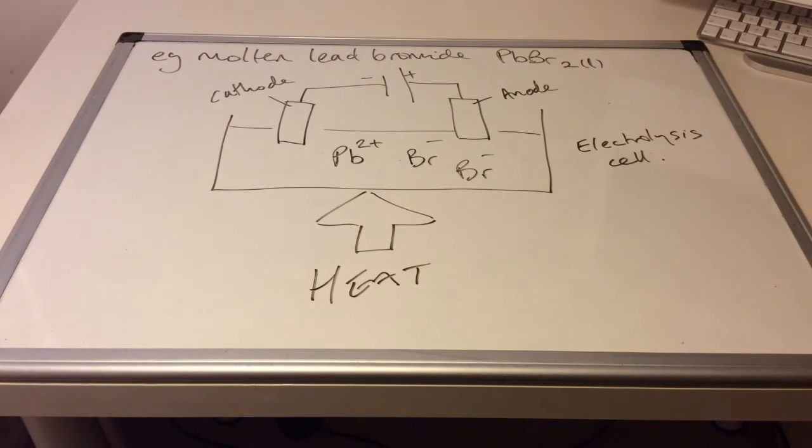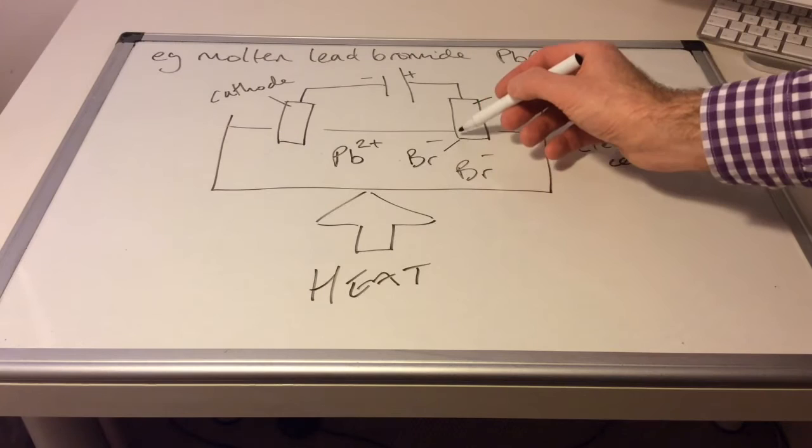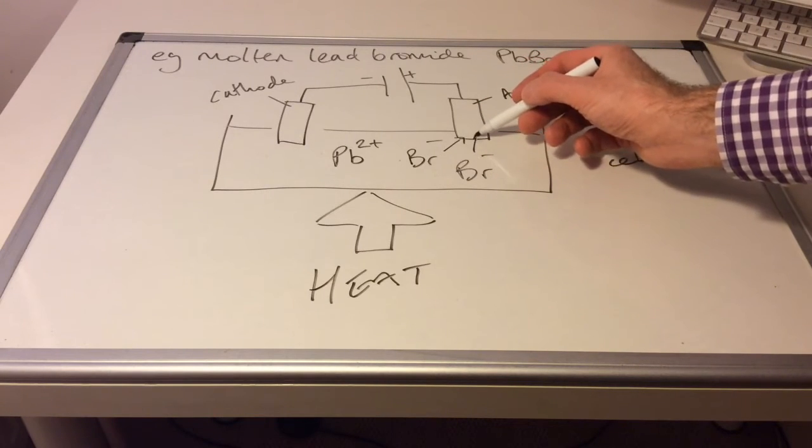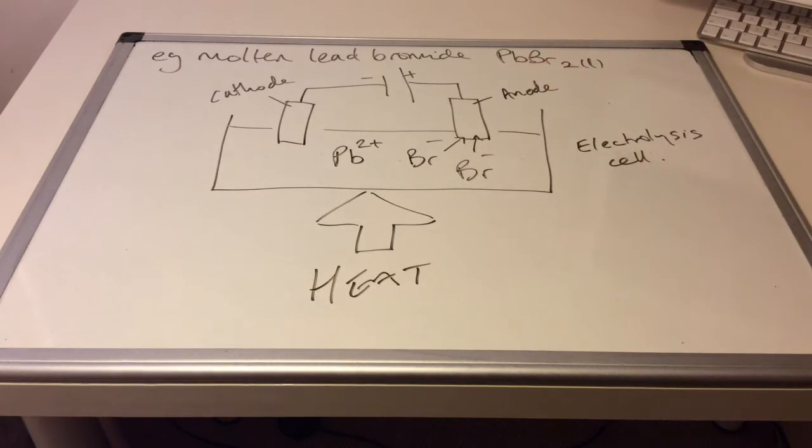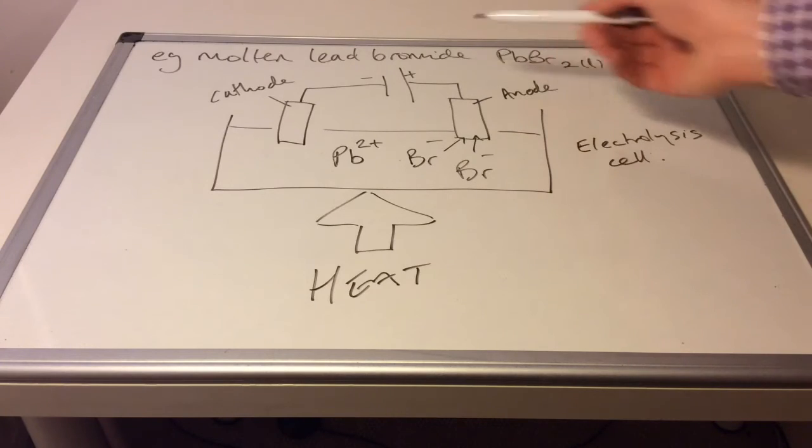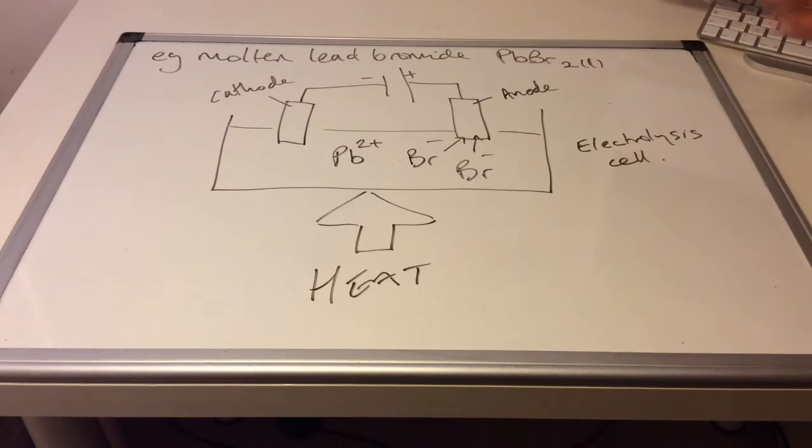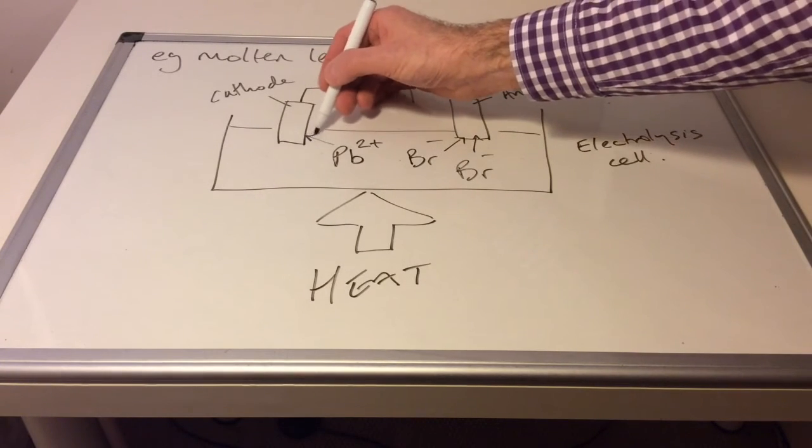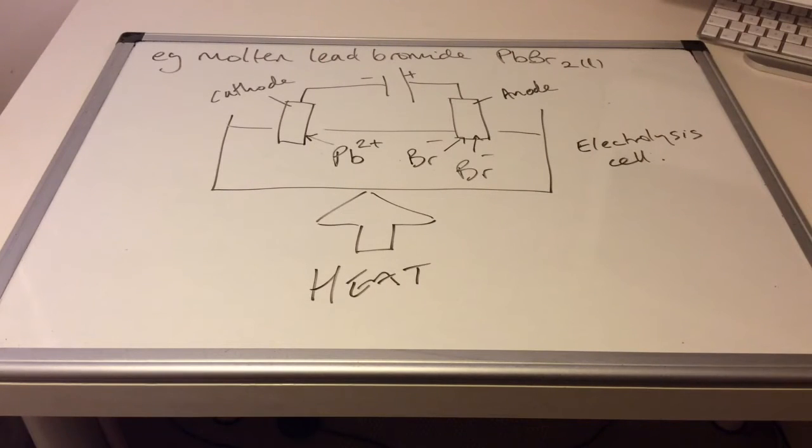So in very simple terms, what's going to happen now, I'm sure you can actually work it out just by looking at the diagram. The negatively charged ions are going to rush to the positive electrode because opposite charges attract each other. And the positive ion, the lead 2 plus ion is going to be attracted to the cathode.